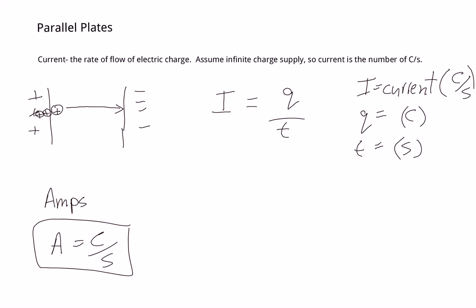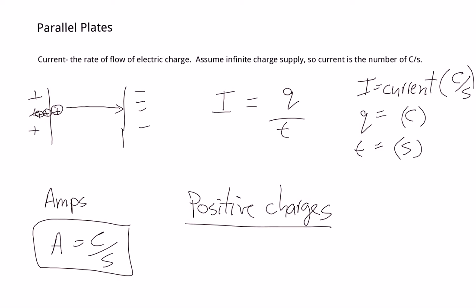So amps is the exact same thing as coulombs per second — that's a key thing to remember. If we had positive charges moving one after the other, all we'd have to do is figure out the total number of coulombs divided by seconds to get our current flow. A current of two amps means we have two coulombs per second flowing. If positive charges are moving like in this diagram, we call that conventional current.